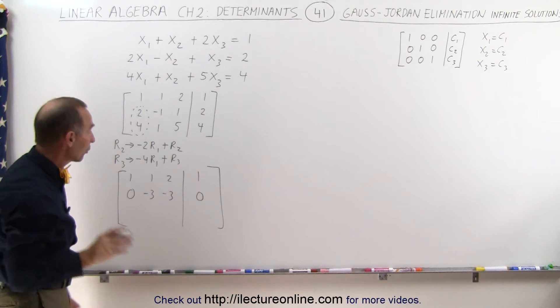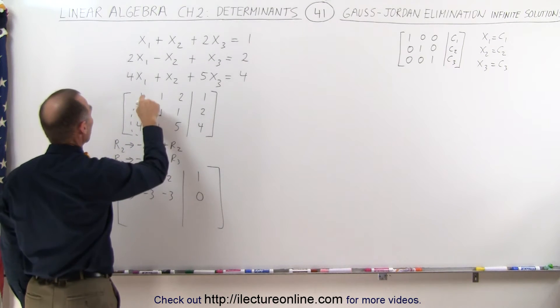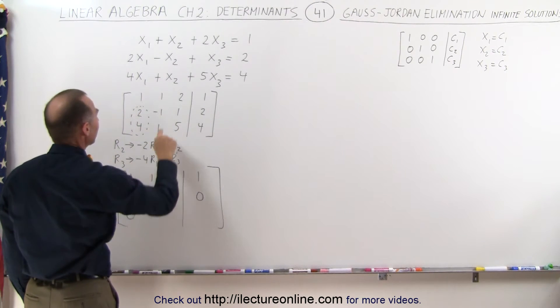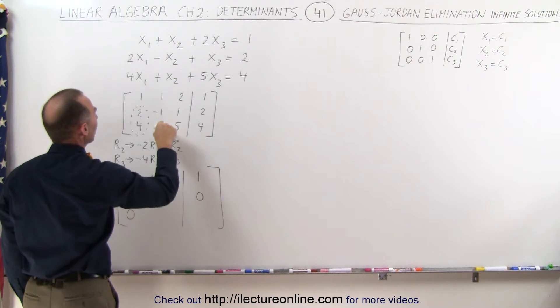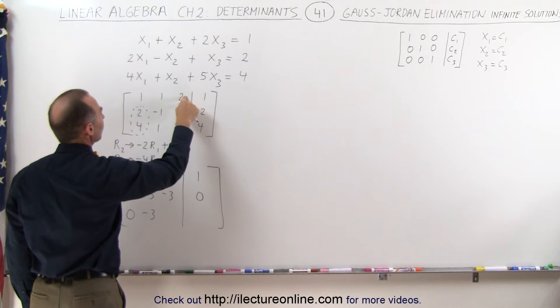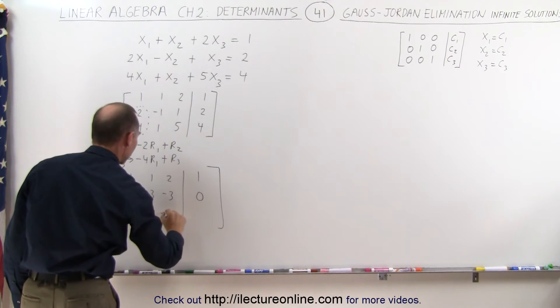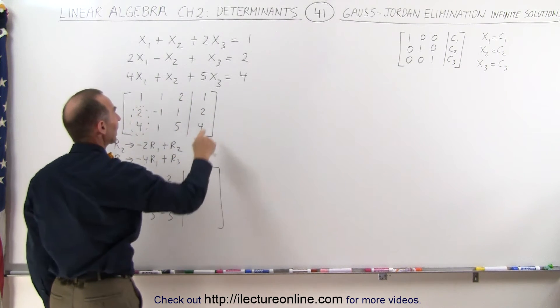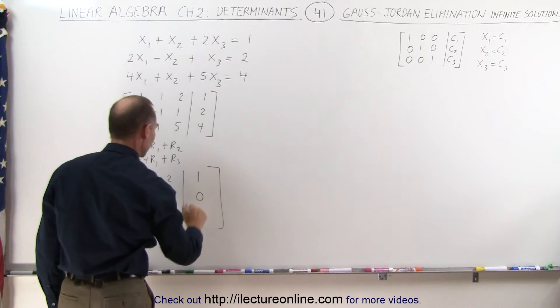Doing the same for the third row, we have negative 4 times 1, added to 4, which is 0. Negative 4 times 1 is negative 4, added to 1, gives me a negative 3. Negative 4 times 2 is negative 8, added to 5, gives me a negative 3. And negative 4 times 1, added to 4, gives me a 0.